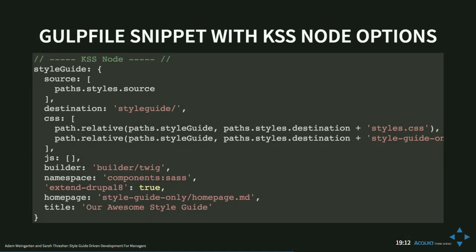Here's a small snippet of a Gulp file for integrating the style guide into your build tool. You pass options such as the stylesheet being loaded for the site, the location you want the style guide to live, and specify you want to use Twig. The namespace bit allows KSS and Drupal namespacing to use the same templates without collisions. All this is configurable — you can make this work with your existing theme, and it's a great time during a refactor to ensure everything is clean and modular.